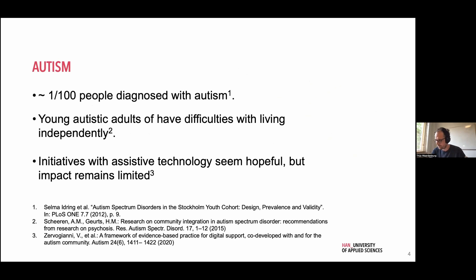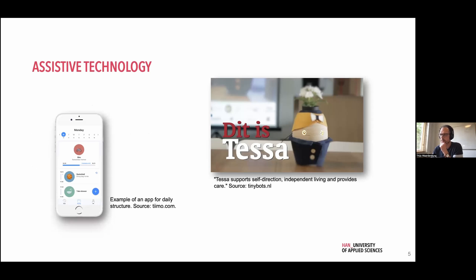About one in 100 people are diagnosed, and there are often difficulties with independent living. There are quite a few initiatives with assistive technology, but the impact somehow remains really limited. These are two examples of available technologies — specifically designed to support daily structure, provide reminders, and so on. This applies to neurodiversity in general as well.